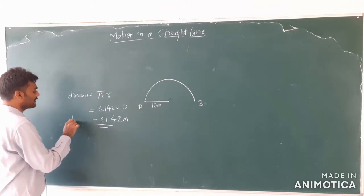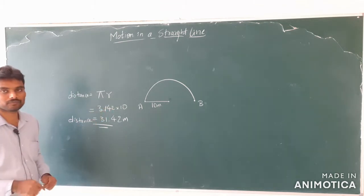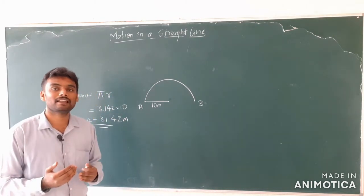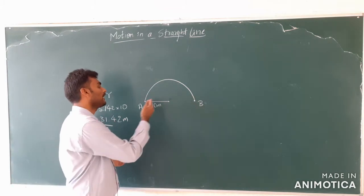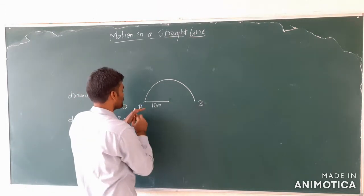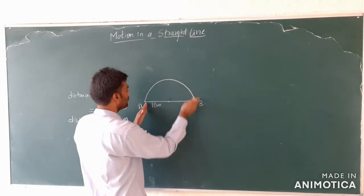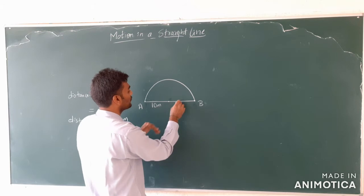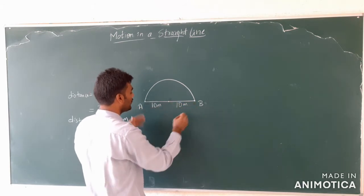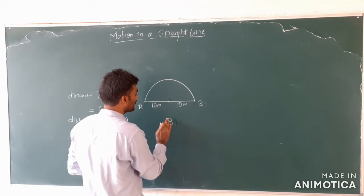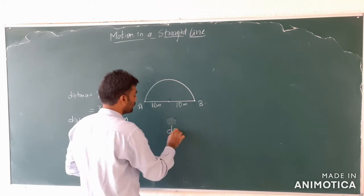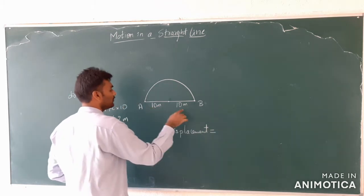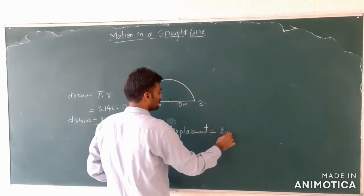This is the distance travelled by the body. For the same example, what is the displacement of the body? Displacement is the shortest length between the final position and the initial position. The final position is B and the initial position is A. If I draw a straight line, that would be the diameter of this semicircular path. The radius is 10 meters on each side, so the total length is 20 meters. Therefore, the displacement of the body is 10 + 10 = 20 meters.